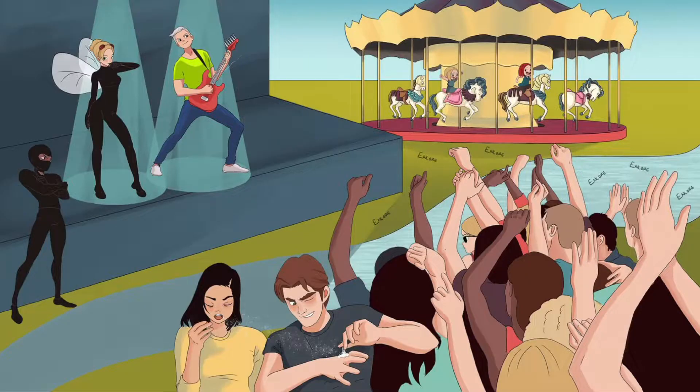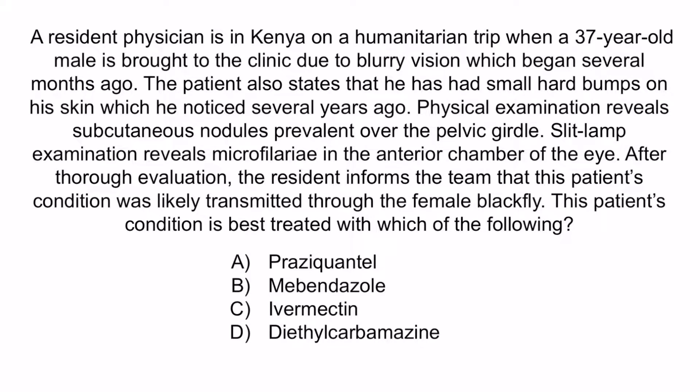Now let's review with a question. A resident physician is in Kenya on a humanitarian trip when a 37-year-old male is brought to the clinic due to blurry vision which began several months ago. The patient also states that he has had small hard bumps on his skin which he noticed several years ago. Physical examination reveals subcutaneous nodules prevalent over the pelvic girdle. Slit lamp examination reveals microfilariae in the anterior chamber of the eye. The resident informs the team that this patient's condition was likely transmitted through the female black fly. This patient's condition is best treated with which of the following? A. Praziquantel, B. Mebendazole, C. Ivermectin, or D. Diethylcarbamazine.